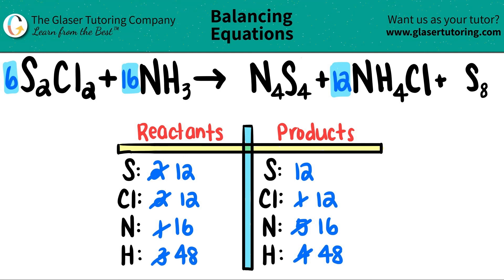But look at that, guys. They're all balanced. 12, 12, 16, and 48. So we're all good. Your new balanced equation is six S2CL2s plus 16 NH3s, which will produce one N4S4 plus 12 NH4CLs plus one S8.